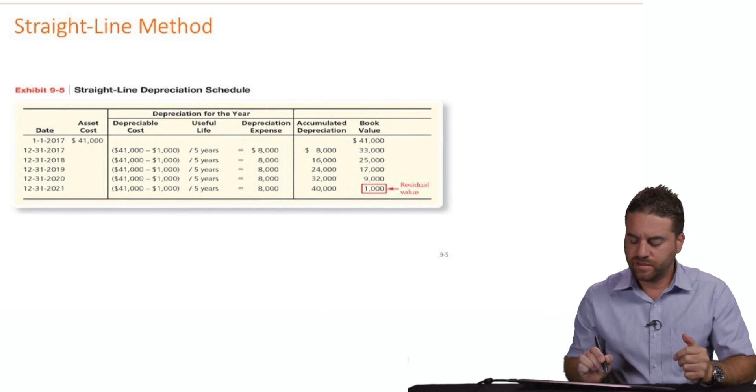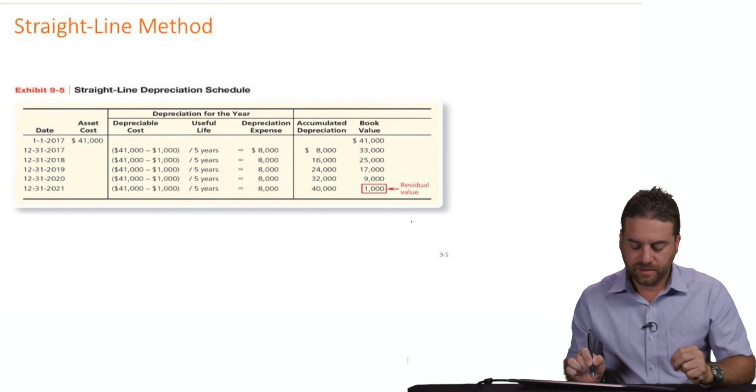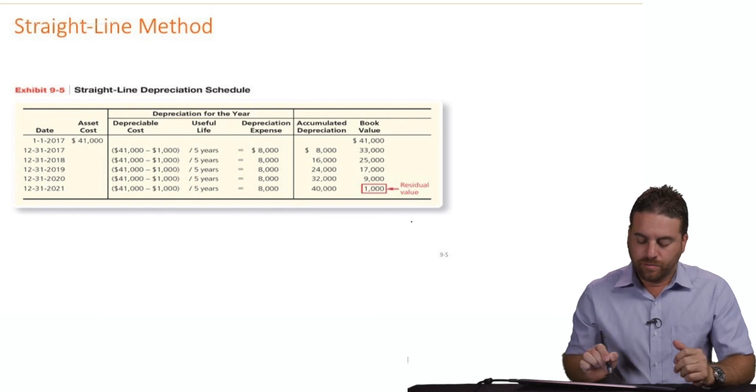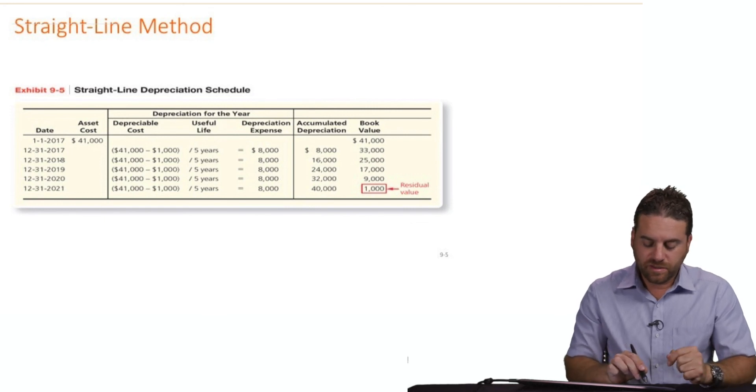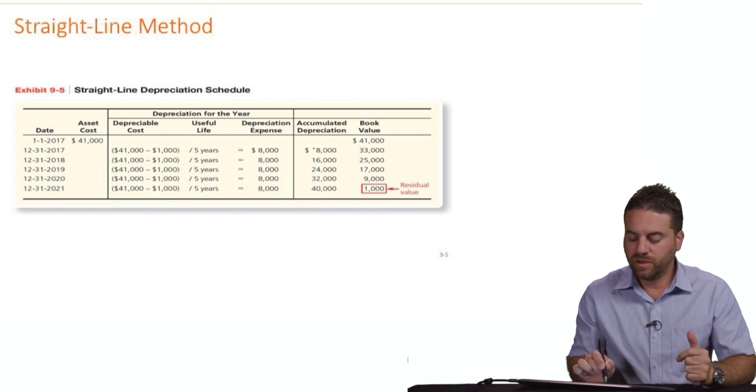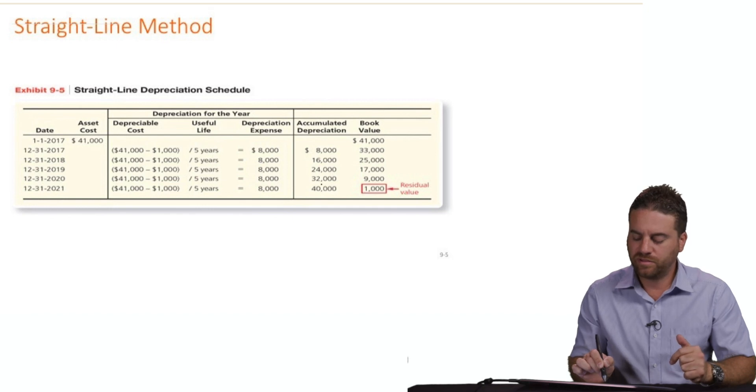Now let's look at the last thing here in the straight line method topic. We call that the amortization table or the depreciation table, depreciation schedule. Year one, year two, year three, year four, year five. Depreciation cost is $8,000 every year. That's the depreciation expense. Accumulated depreciation, year one was $8,000. Year two, we added another $8,000, that became $16,000, and then we added another $8,000 to become $24,000, then $32,000, and then $40,000.